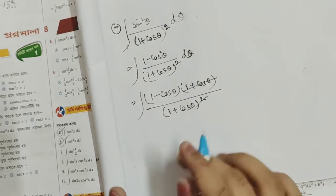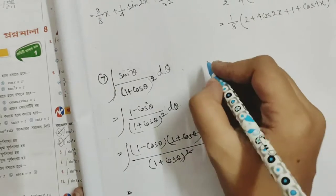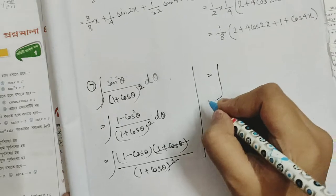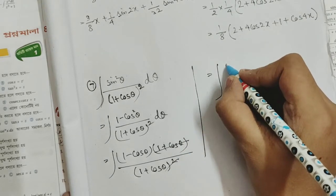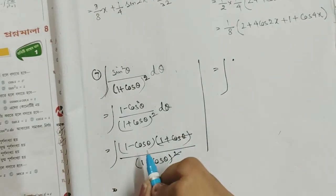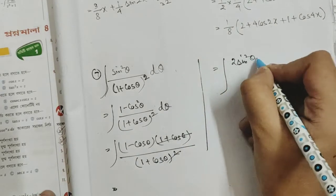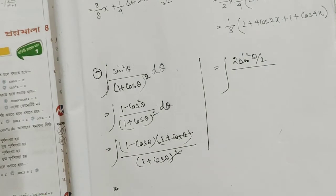1 minus cos theta is the same thing. We call it the 1 minus cos 2 theta formula. We call it 1 minus cos 2 theta equals 2 sin squared theta. So this is 1 minus cos theta, which we call 2 sin squared (theta by 2).